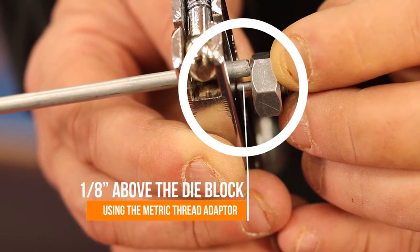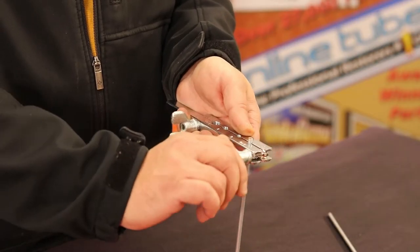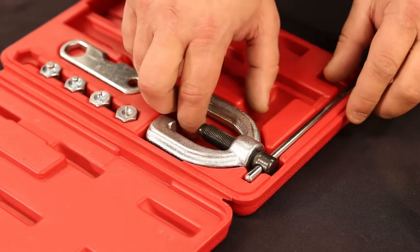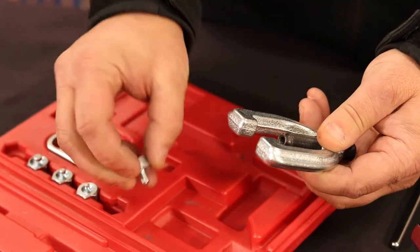With your tubing properly positioned, tighten the side clamps on the die block until secured. Now grab the pressure die clamp and the proper metric thread adapter.